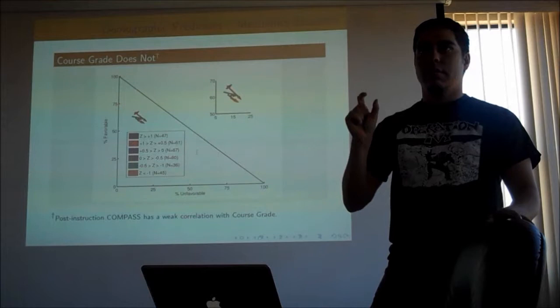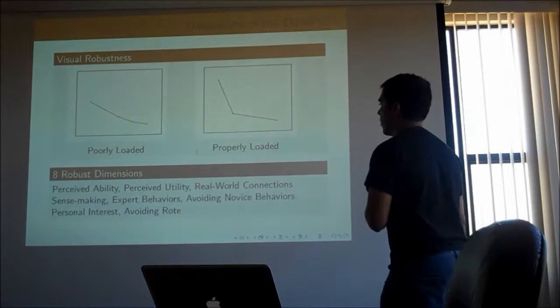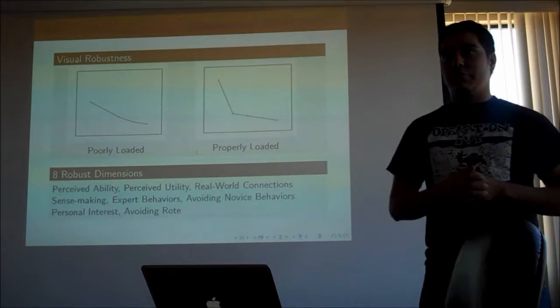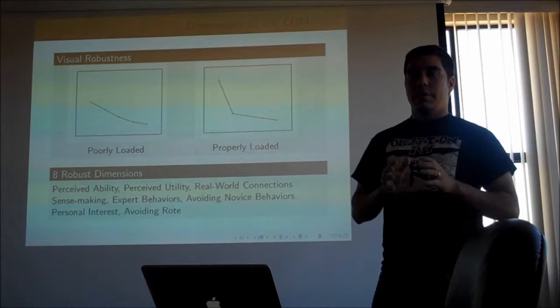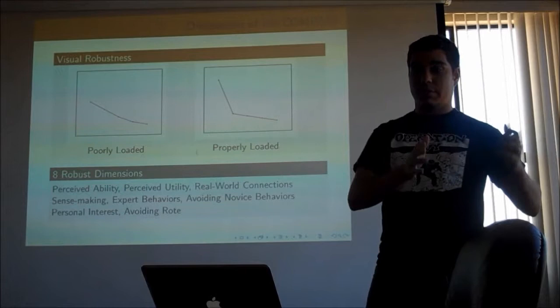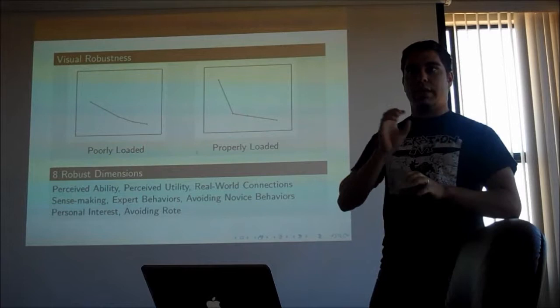The eight COMPASS dimensions are: how students think about their own ability to use computation; how useful they think computation is; whether they think computation is connected to how real-world science is done; whether they try to make sense of the computer model; whether they apply expert-like behaviors such as debugging; whether they avoid novice-like things like plugging in and memorizing; their personal interest in learning computation; and whether they avoid memorizing syntax.